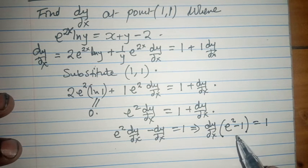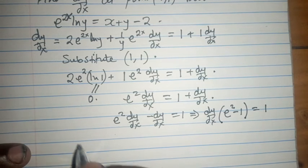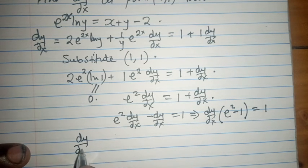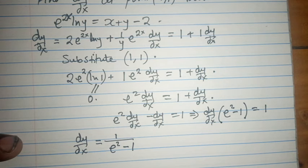And if we divide both sides by e squared minus 1, then we make dy/dx the subject of the formula. dy/dx is going to be 1 over e squared minus 1, and that is the final submission as far as that question is concerned.